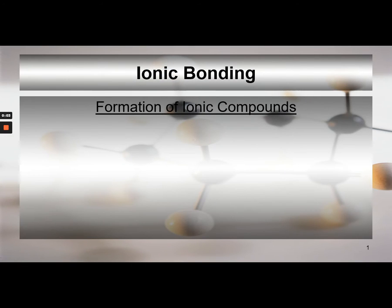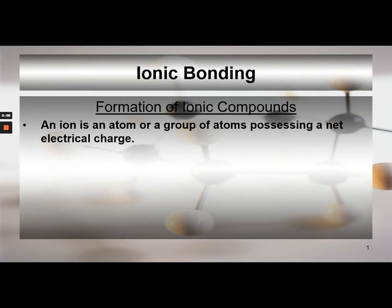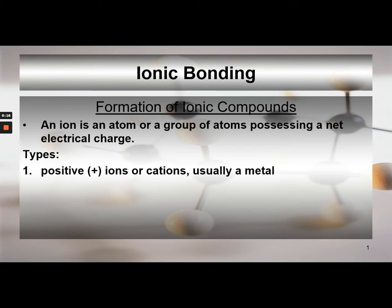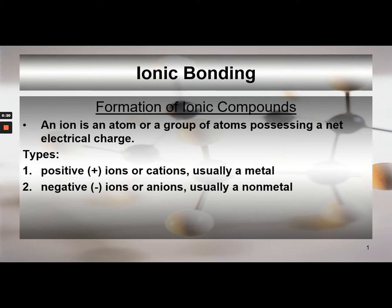Ionic bonding — formation of ionic compounds. An ion is an atom or group of atoms possessing a net electric charge. You have cations, which are positive and usually a metal, and you have anions, which are negative and usually a nonmetal. Opposite charges attract, their oxidation numbers will cancel, and you form a neutral compound.